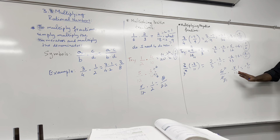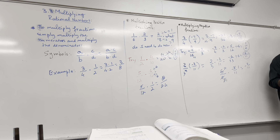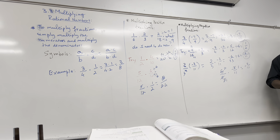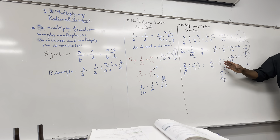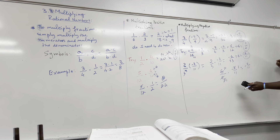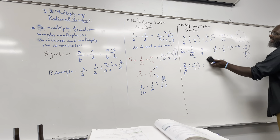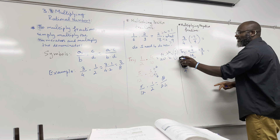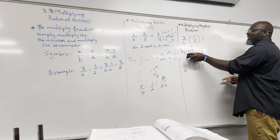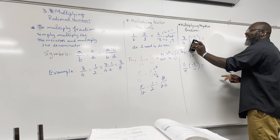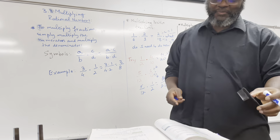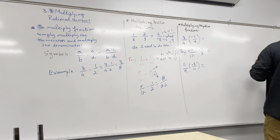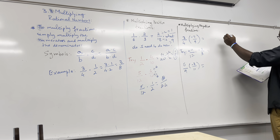I can simplify six over 12 by six. Divide by six — I get one half. Now try this one: six over nine times negative three over 11.